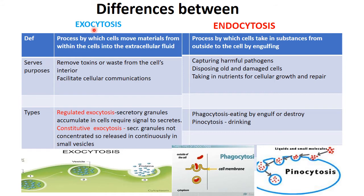The definition of exocytosis is the process by which cells move materials from within the cell into the extracellular fluid — it goes outside. Endocytosis is the process by which cells take in substances from outside the cell by engulfing them.